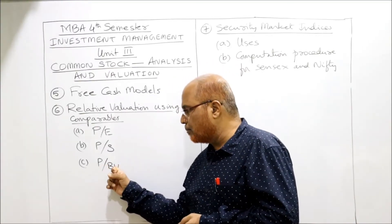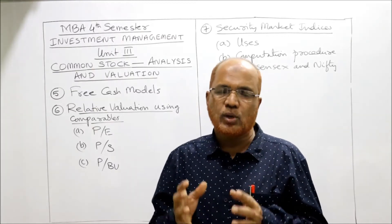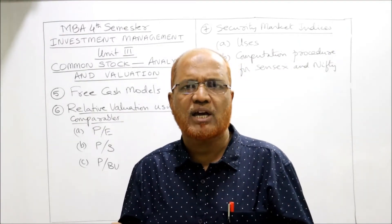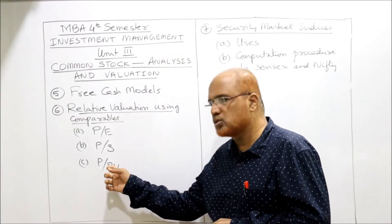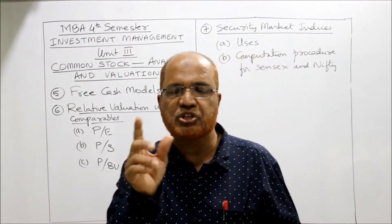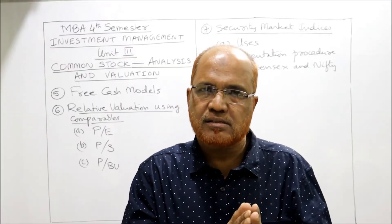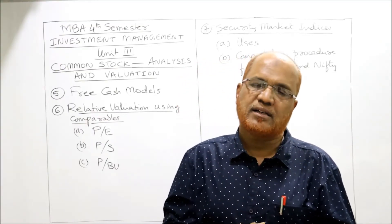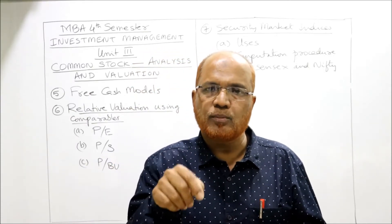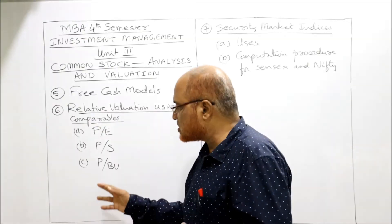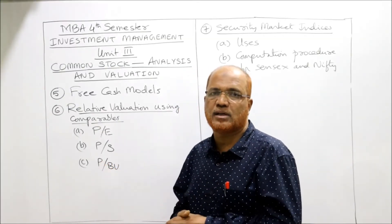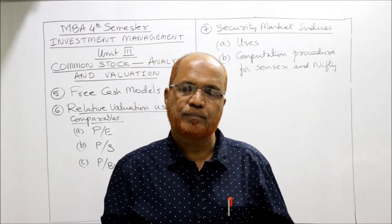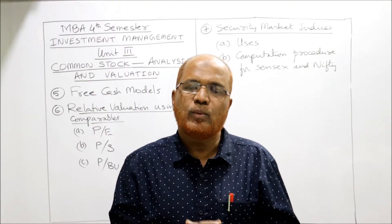The next topic is Price by Book Value (P/BV). Book value comes from the balance sheet. From all the assets we subtract outside liabilities to get the net worth, which is then divided by the number of equity shares to get the book value per share. We calculate the average P/BV ratio of the past few years and multiply it by the current book value per share to arrive at the intrinsic value per share.